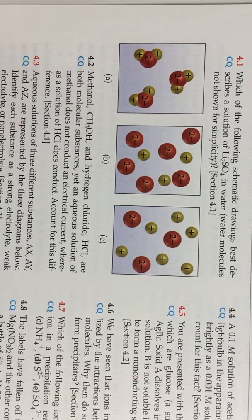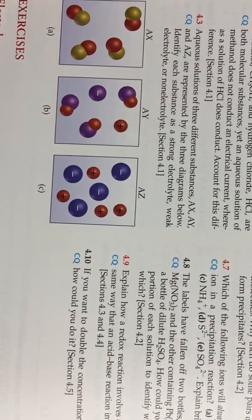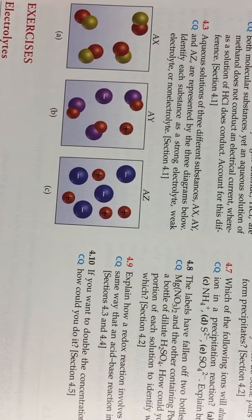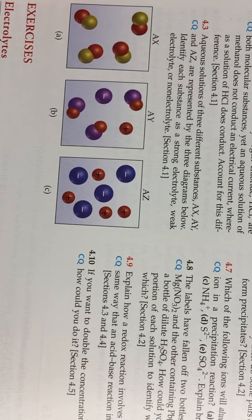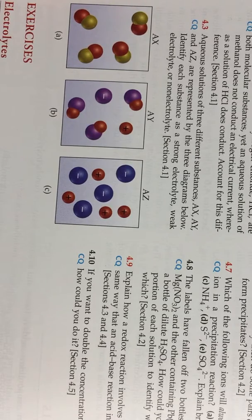All right, let's look at 4.3. They give us three aqueous solutions - three different substances AX, AY, AZ represented by the diagrams there. One is a strong electrolyte, one is a weak electrolyte, and one is a non-electrolyte.